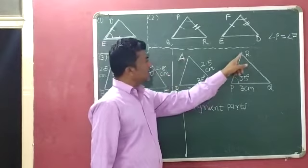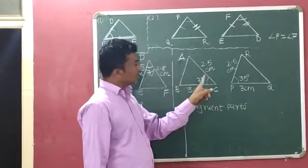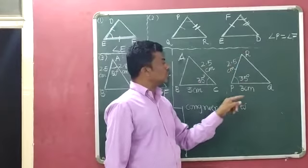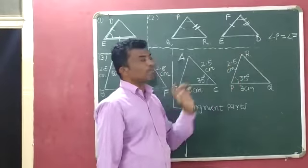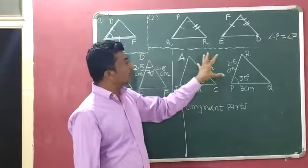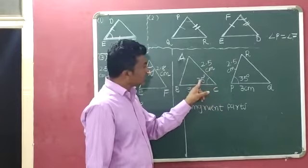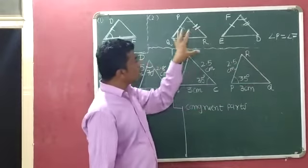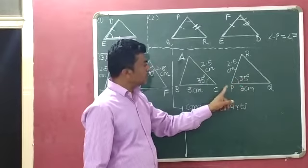Next: triangle ABC and triangle RPQ are given. In triangle ABC, BC = 3 cm, angle C = 35°, and CA = 2.5 cm. In triangle RPQ, PQ = 3 cm, angle P = 35°, and PR = 2.5 cm. According to the SAS congruence criterion, we have to check whether they are congruent. Angle C = 35° and angle P = 35°, so P can fall on C.